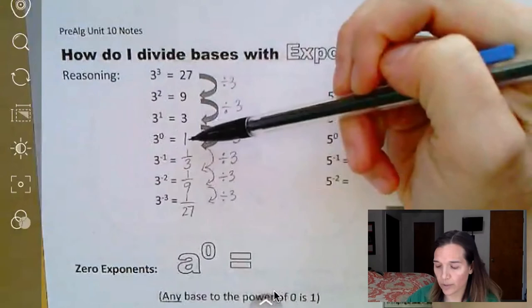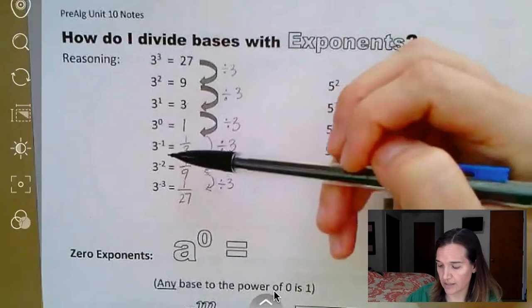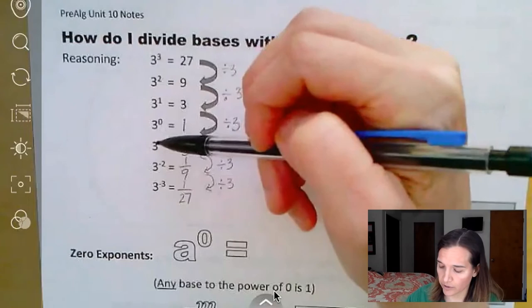So notice that anything to the zero power is always going to be one, no matter what. And then when you have negative exponents, its answer is actually the reciprocal of the number, the base that you have there.